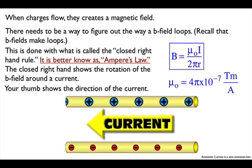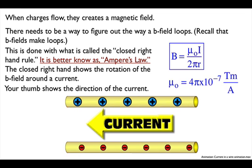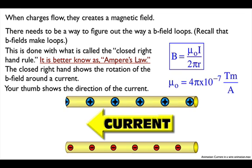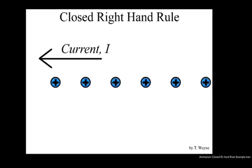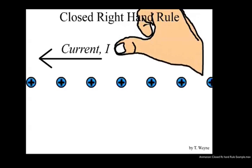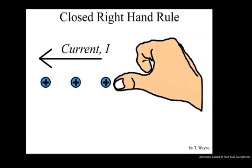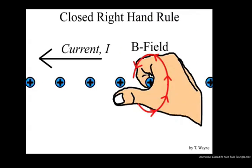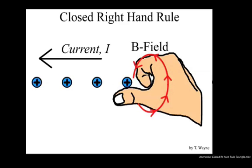So for us, current is going to be the flow of those charge carriers that deliver the energy in our circuit. If you're thinking about current as the flow of electrons, then it's going to be backwards — you'd have to use a left-hand rule. For the closed right-hand rule, we're defining current as the flow of positive charge. So if my positive charge is going from right to left, my thumb points in the direction of the current, and I grab this flow of charges with my right hand. My fingers are showing me the direction the loop turns — that's the B-field.